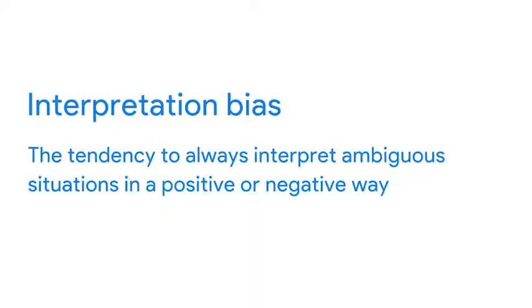Another common type of data bias is interpretation bias — the tendency to always interpret ambiguous situations in a positive or negative way. For example, let's say you're having lunch with a colleague when you get a voicemail from your boss asking you to call her back. You put the phone down in a huff, certain that she's angry and you're on the hot seat for something. But when you play the message for your friend, he doesn't hear anger at all — he actually thinks she sounds calm and straightforward. Interpretation bias can lead to two people seeing or hearing the exact same thing and interpreting it in a variety of different ways because they have different backgrounds and experiences. Add these interpretations to a data analysis and you can get biased results.